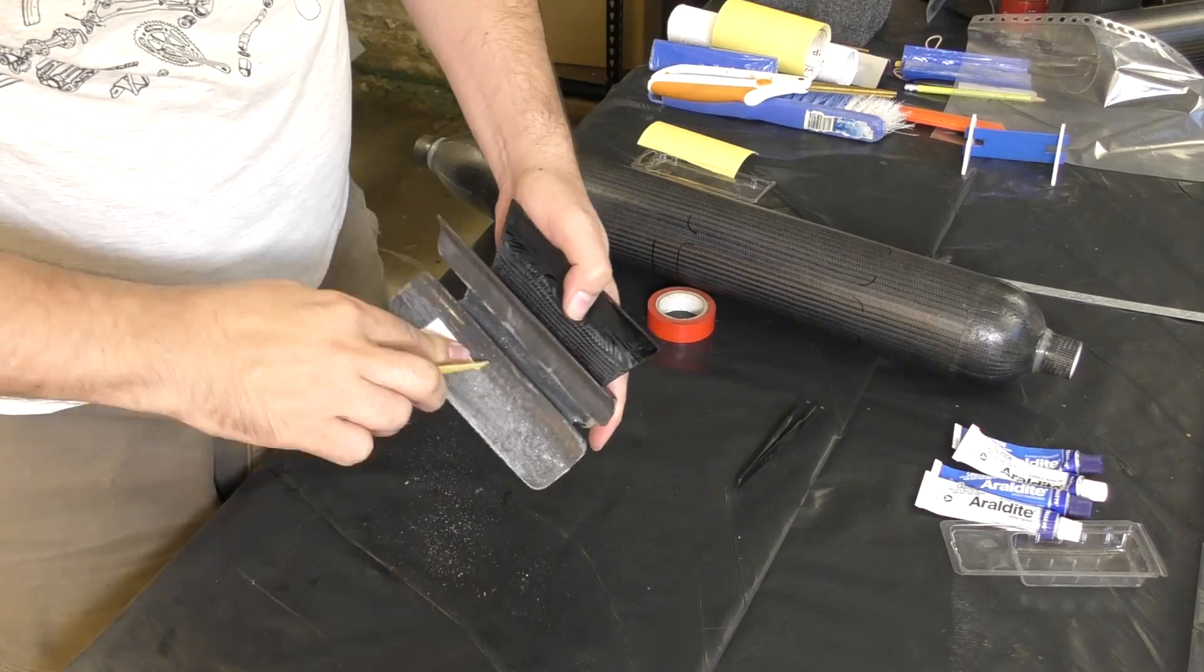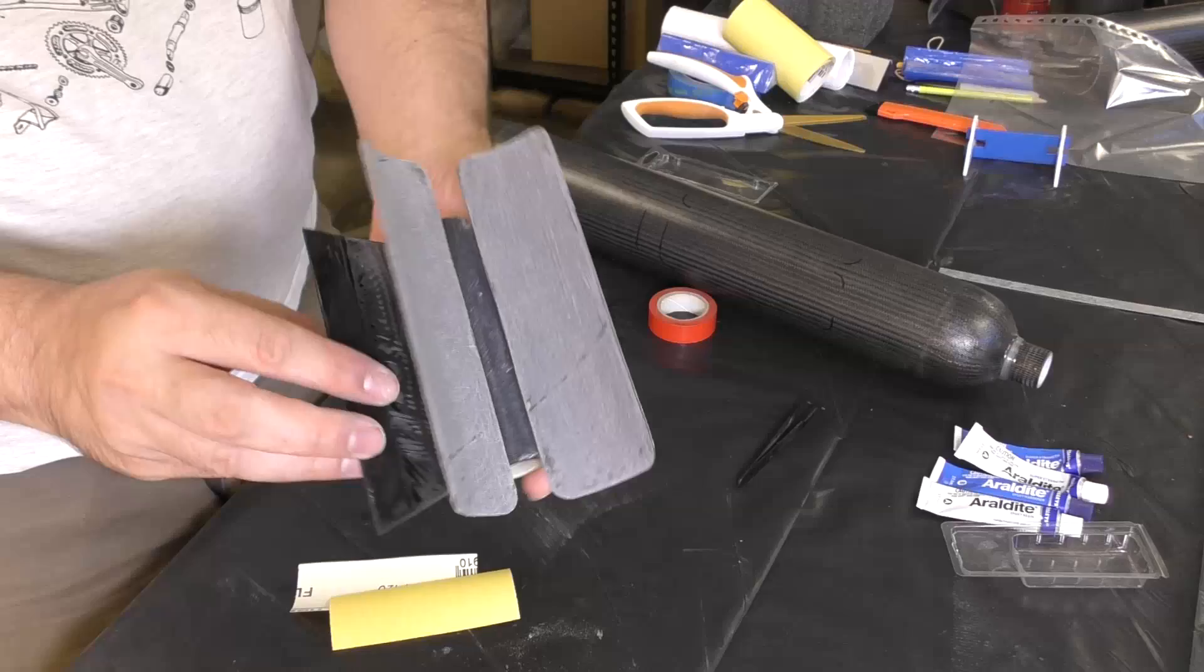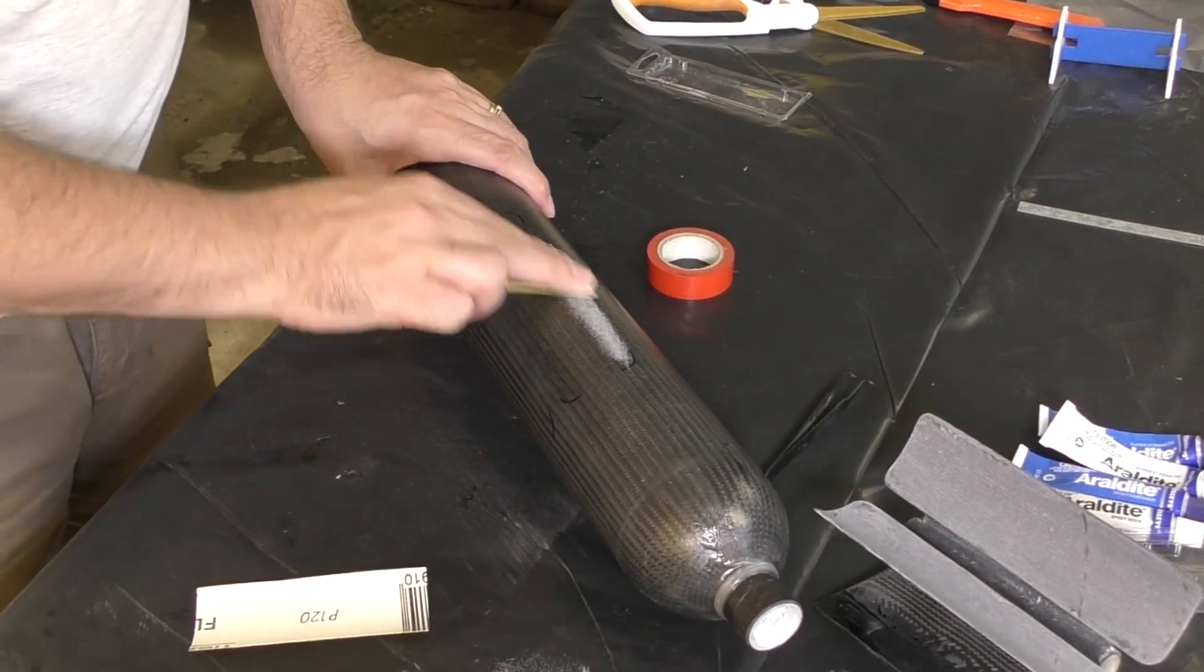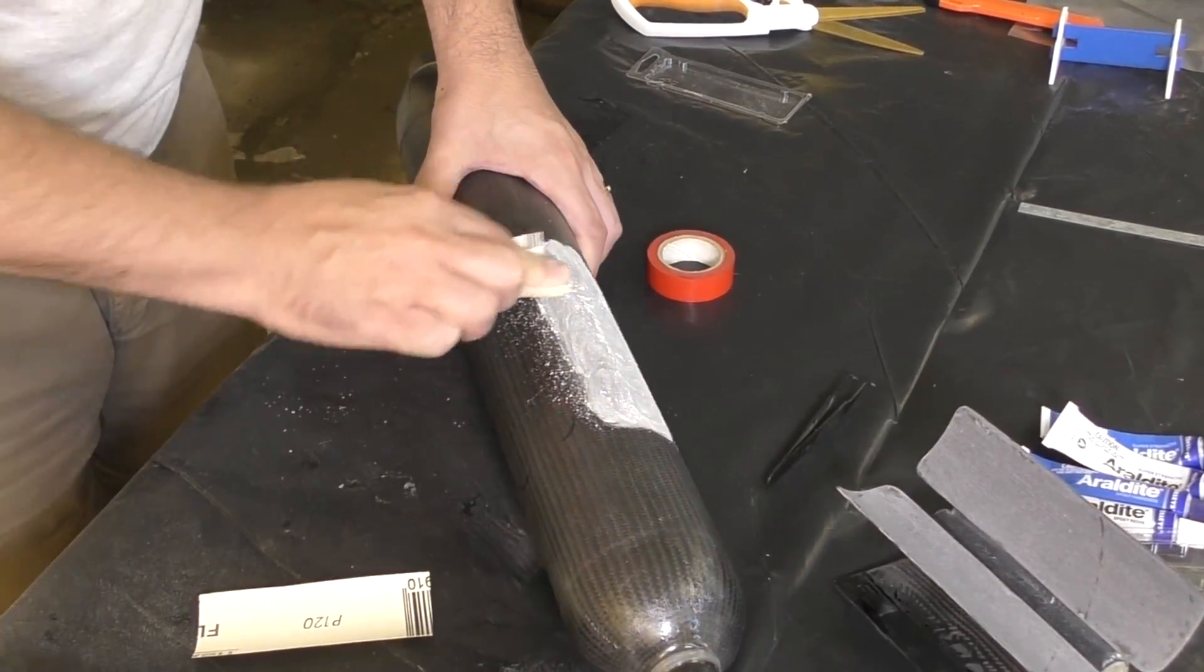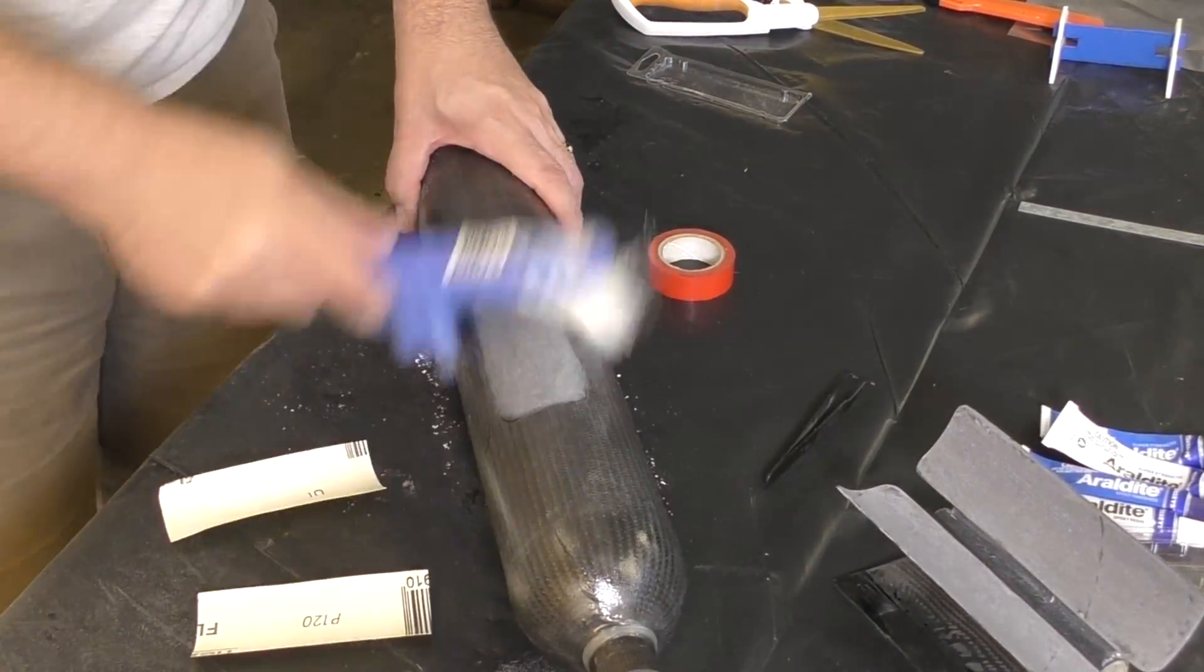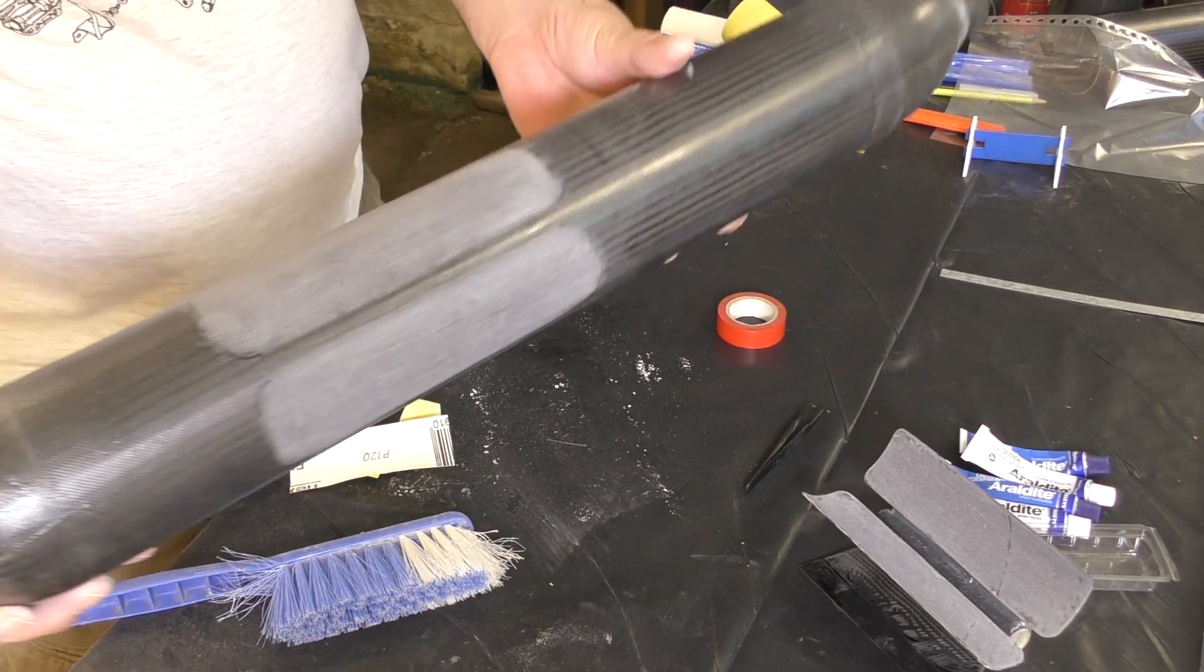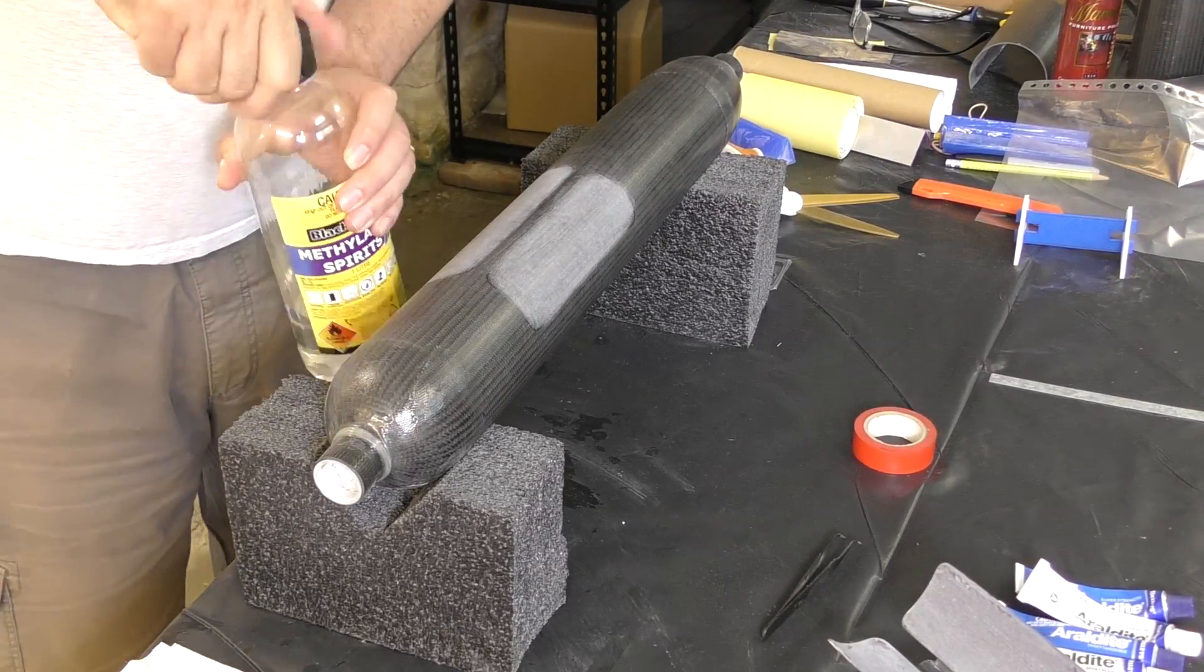Now it's time to attach the brackets to the pressure chamber. Doing the mounts this way means it will be a lot easier to join all the booster segments together rather than trying to apply fiberglass to the joints with the whole booster assembled. We prepare the bonding surfaces first by sanding them and then cleaning them with a brush and finally with some methylated spirits.